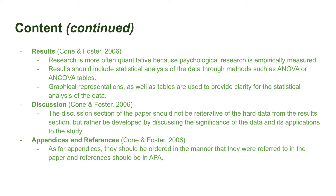The results section also includes tools such as tables and graphs to guarantee the clarity of findings. Unlike the results section, the discussion section should not be reiterative of the data found but should instead develop its meaning. The discussion section should include statistical analysis to reinforce its development but should refrain from using too much statistical jargon. It should also connect back to the literature review when discussing the implications of the study. These implications should state what the paper means for the area of focus and how it can aid future research. It's also important that it includes the limitations of the study.